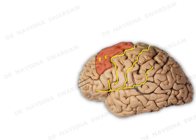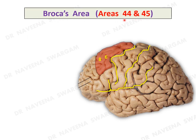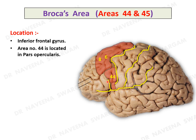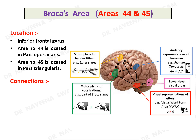Broca's area, areas 44 and 45, is located in the lower part of the inferior frontal gyrus. Area 44 is located in pars opercularis between the anterior ascending and posterior ramus of the lateral sulcus. Area 45 is located in pars triangularis between the anterior horizontal and anterior ascending ramus of the lateral sulcus. It is connected to the writing center in the premotor area of the frontal lobe, Wernicke's area (the sensory speech area in the temporal lobe), and a few lower-level visual areas in the occipital lobe.